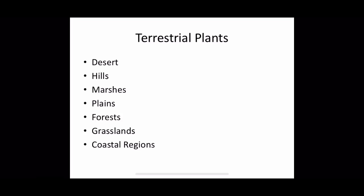Let us start with deserts. Deserts are areas that receive very little or less rainfall, and the temperature during the daytime is very high — it is very hot, dry and full of sand. Due to very little rainfall, there is very little water availability. Due to the scarcity of water, desert plants adapt themselves to obtain water from the soil and to prevent loss of water.